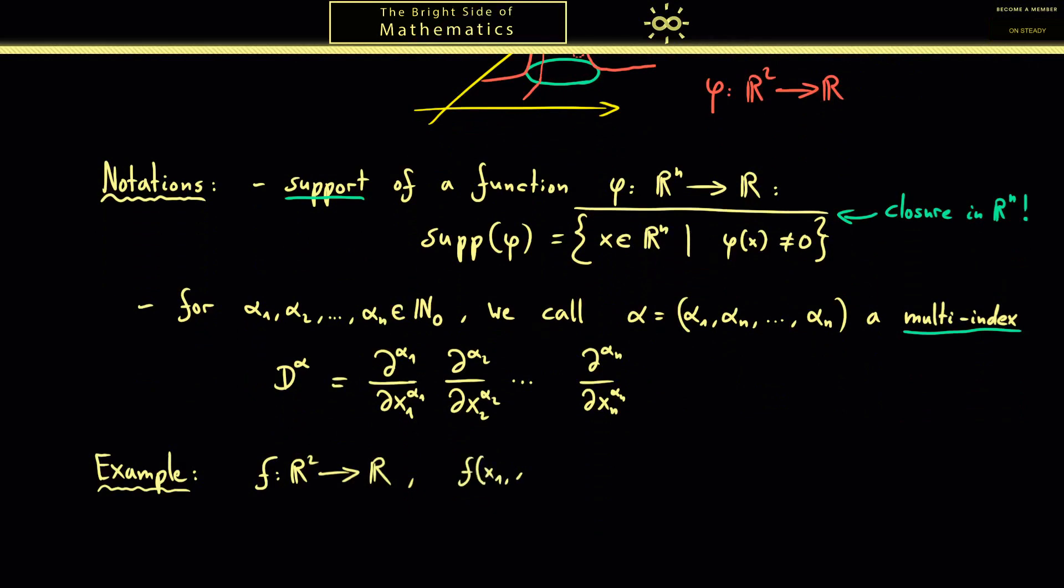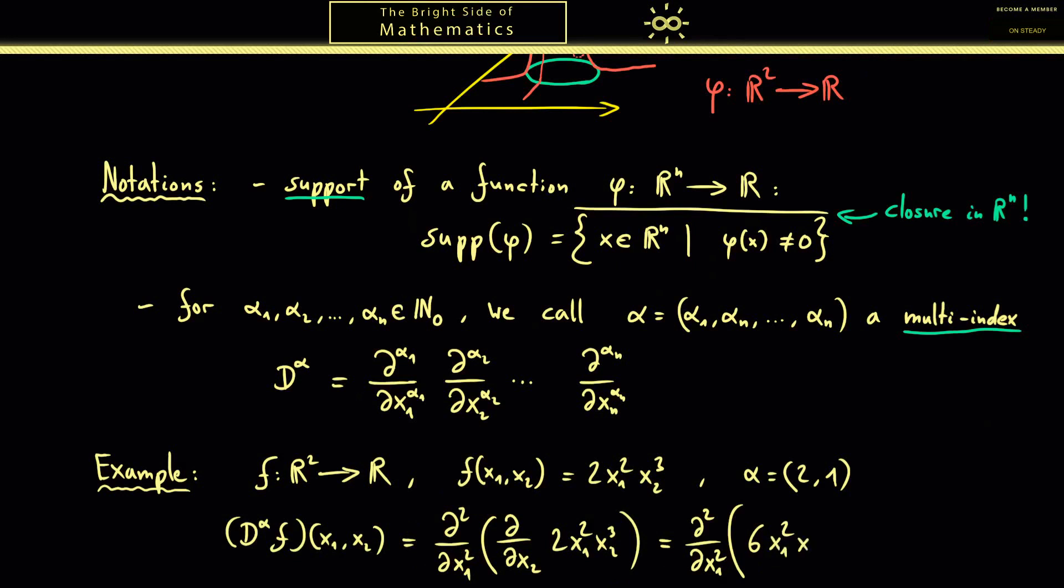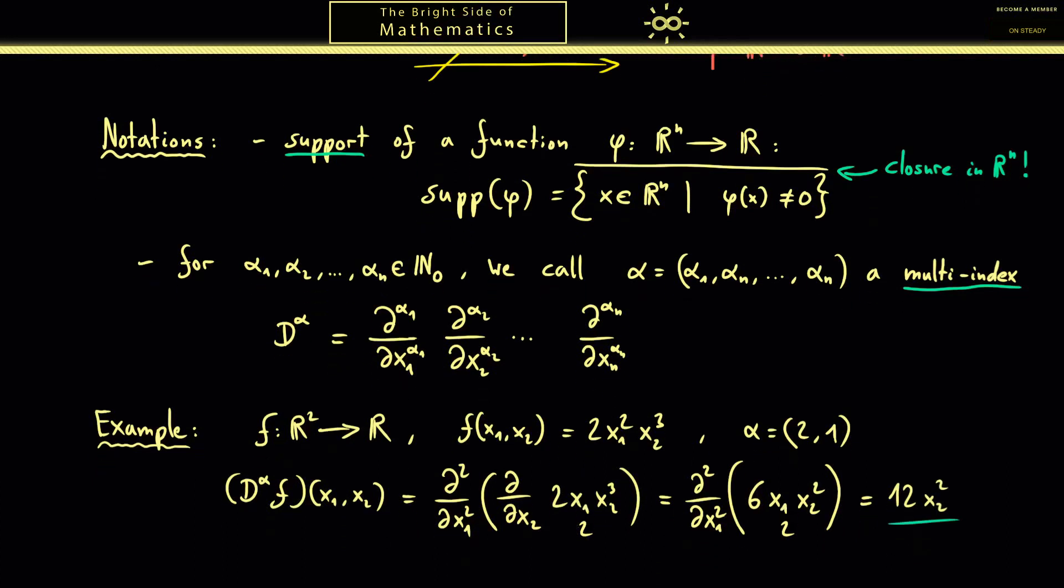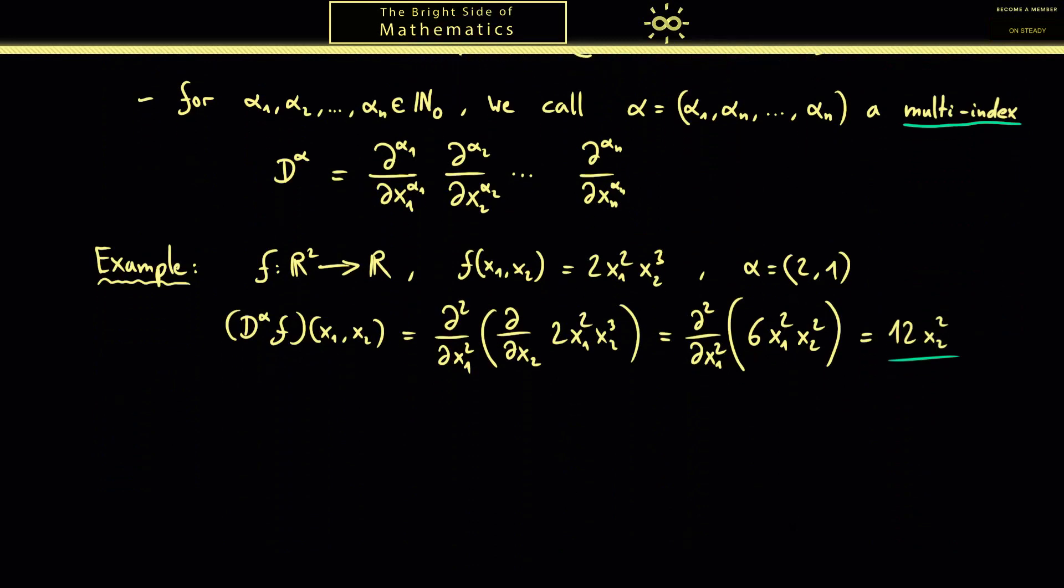Again let's look at a two-dimensional example. So we have two variables x_1, x_2 and maybe the function is given as 2x_1² times x_2³. And let's choose our multi-index α as (2,1). Then D^α f is again a function depending of two variables. And given by the partial derivatives two times with respect to x_1 and only one partial derivative with respect to x_2. And then we put the function behind. In the first step we get 6x_1 and x_2². And the second derivative with respect to x_1 gets us to 12x_2².